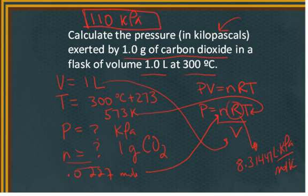So, using the ideal gas law, recognizing that this is a one-state problem, I can solve for P using the R with the kilopascal unit, calculating for N simply by looking up the molar mass of carbon dioxide and converting to moles of carbon dioxide, I can calculate that the pressure is 110 kilopascals.